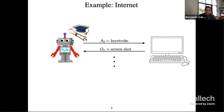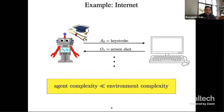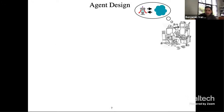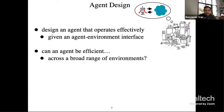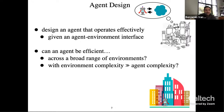When we move to an agent working with something like the Internet, it's clear that the agent complexity is going to be much smaller than the environment complexity. There's so much going on in the environment that the agent can't keep track of everything. Reinforcement learning is about agent design — how to design such an agent that operates effectively given an agent-environment interface. One might ask: is it possible to design an agent that's reasonably efficient across a very broad range of environments, with the notion that environment complexity far exceeds agent complexity?